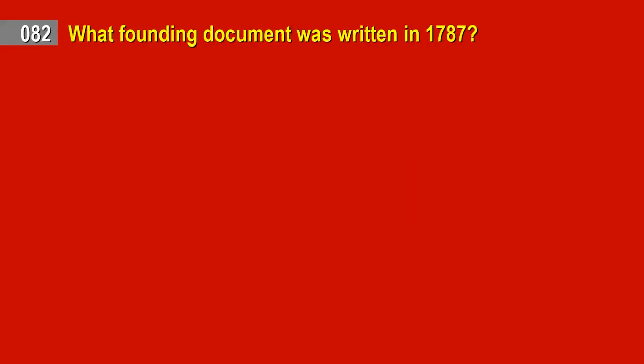Question 82. What founding document was written in 1787? Answer: The U.S. Constitution.